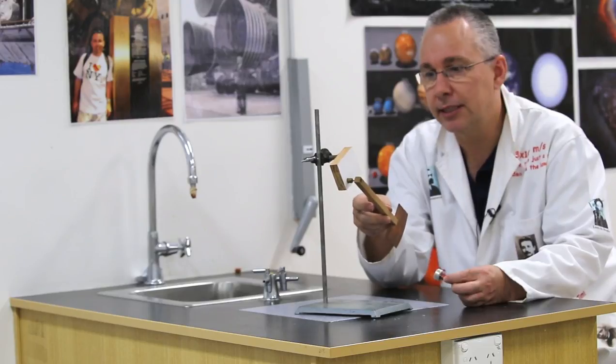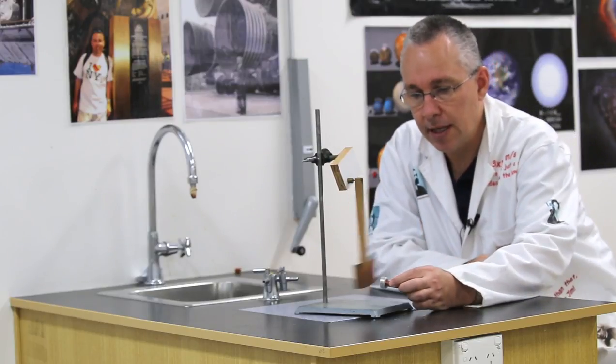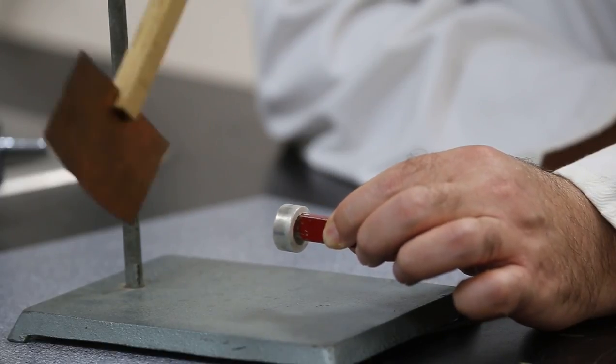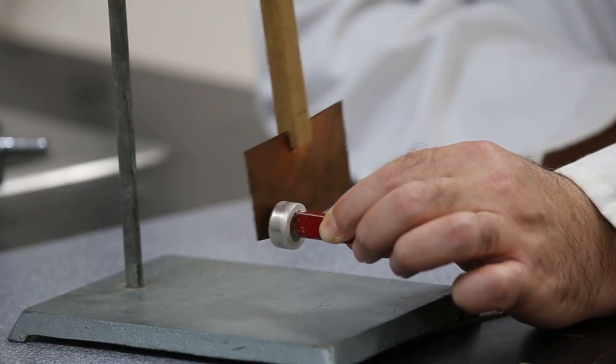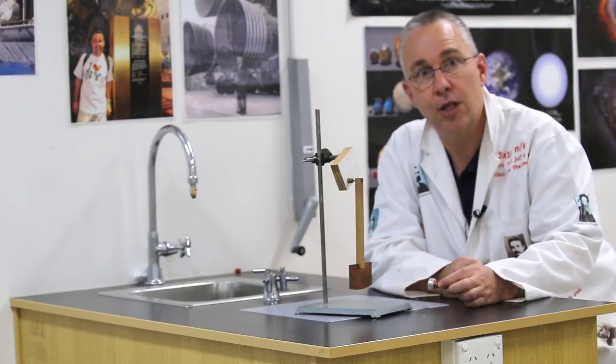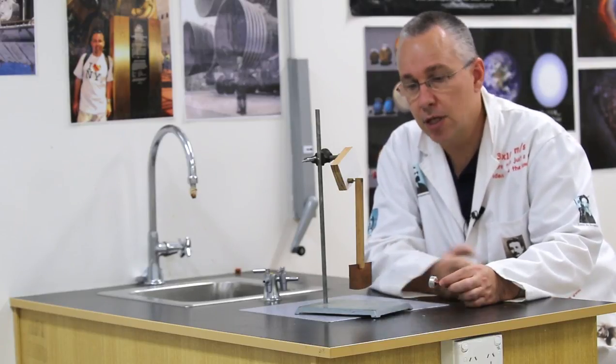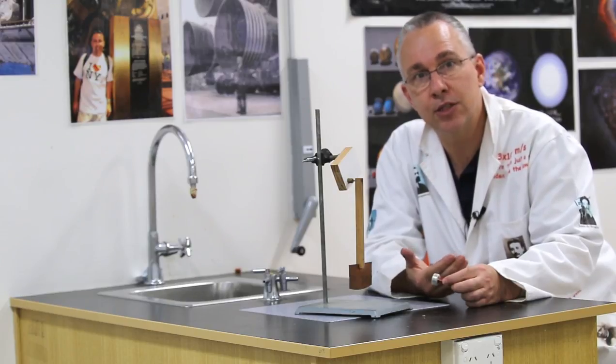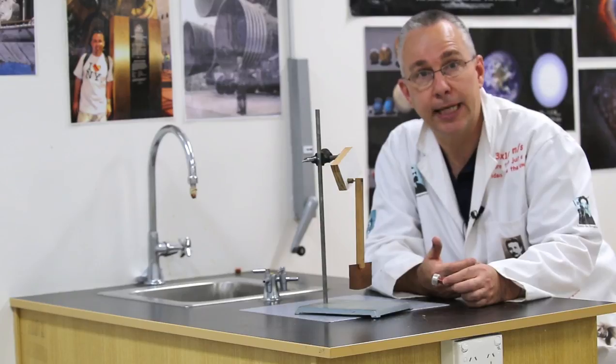But what if I now actually start it to swing and then bring my magnet really close to it without touching? As you can see, the piece of metal slows down reasonably quickly. So what's going on? Well, that's all about eddy currents, which leads us to our understanding of electromagnetic braking.